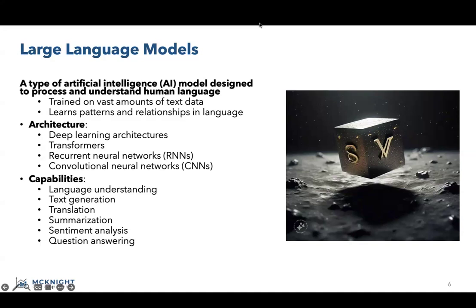We're talking about images, video, and audio signals. The key components of an LLM are convolutional layers, where filters are applied to small regions of the input data scanning it in a sliding window fashion; activation functions, which introduce non-linearity to the model enabling it to learn complex patterns; and pooling layers, which downsample the data, reducing spatial dimensions while retaining important features.